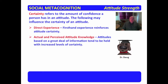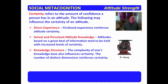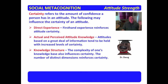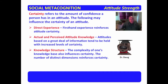Actual and perceived attitude knowledge: attitudes based on a great deal of information tend to be held with increased levels of certainty. Knowledge structure — the complexity of one's knowledge base — also influences certainty. The number of distinct dimensions reinforces certainty. This might mean that I experienced it today, experienced it yesterday, know that another person did it, and read about it in a book — all of that complexity increases the certainty of the attitude.